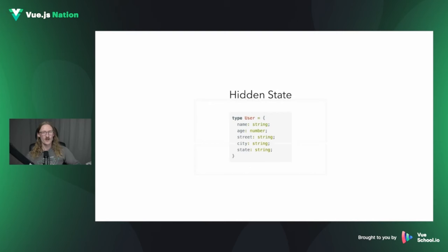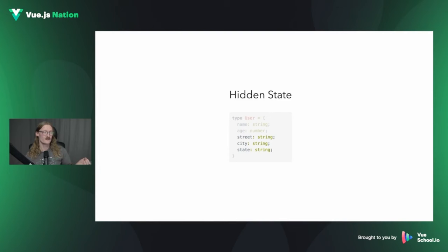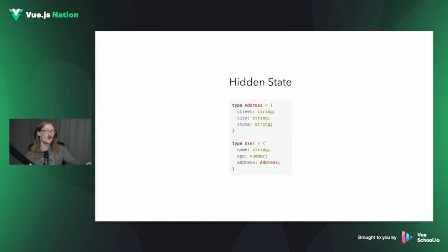There's also the concept of hidden state, very similar to the hidden components pattern. If we have a User type with properties like name, age, street, city, and state, and we notice that street, city, and state are constantly being used together, that tells us there's a distinct subset of the state. Similar to finding distinct subsets of functionality with hidden components, here we're looking at distinct subsets of our type — which gives us a clue to tease this apart into a separate Address type and a User type.